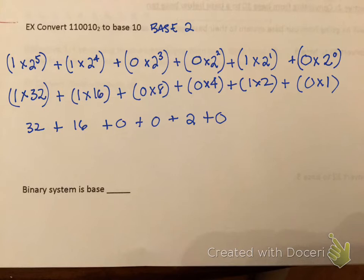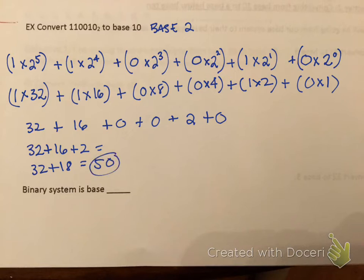So I have 32 plus 16 plus 2, basically. 32 plus 16 plus 2 gives me a grand total of 50. So that's my answer — 110010 base 2 is 50 in base 10. And by the way, base 2 has a special name: it's called binary. The word prefix 'bi' means 2, so binary system is base 2.